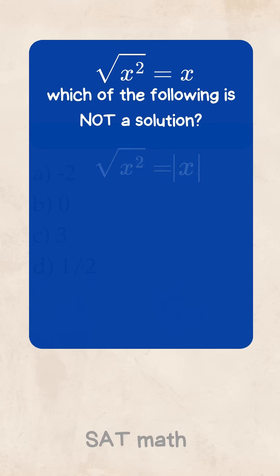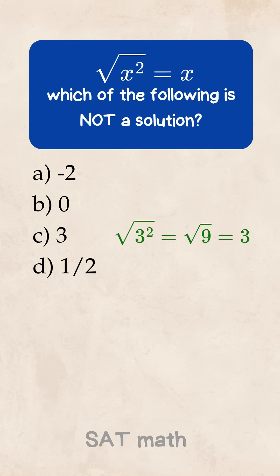Let's test it. x equals 3. Square root of 3 squared is square root of 9. That's 3. Works. x equals 0. Square root of 0 squared is 0. Still good.